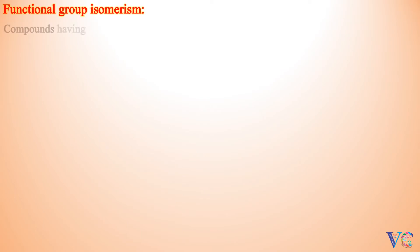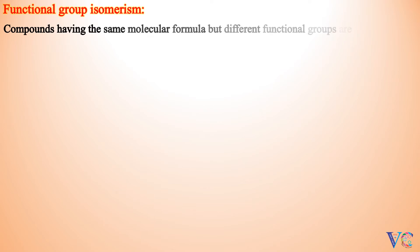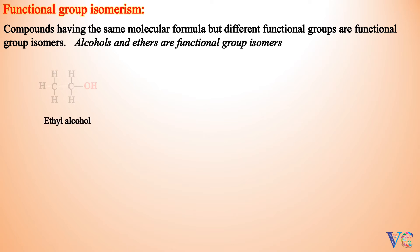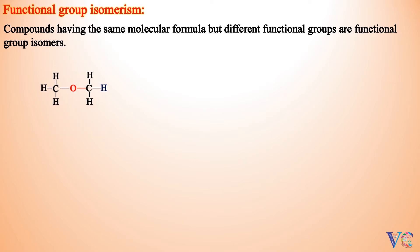Functional Group Isomerism: compounds having the same molecular formula but different functional groups are functional group isomers. Ethyl Alcohol and Diethyl Ether are functional group isomers — both have molecular formula C2H6O.